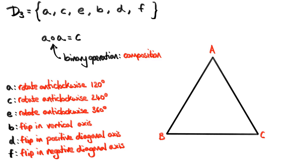We can continue to call a rotation anticlockwise by 240 degrees by the letter C, but we've just seen that rotation can be represented by the transformation A followed by the same transformation A. So we're going to come up with a better symbol for C — that is A squared. This isn't the multiplication of A times A, because A is a transformation and not a number, so it can't be multiplied. But A squared is a way of remembering that the rotation anticlockwise by 240 degrees is made up of two rotations of 120 degrees. So let's replace C with A squared.